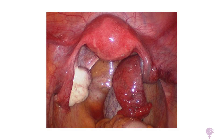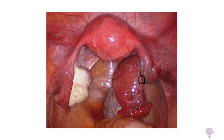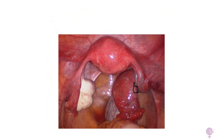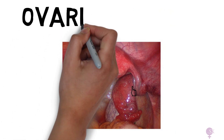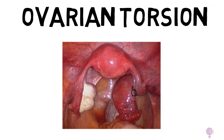Have a look at this laparoscopic image. We can see a very nice left ovary and tube, but on the right the ovary is enlarged, containing an ovarian cyst, and the tube is twisted. This is called ovarian torsion.